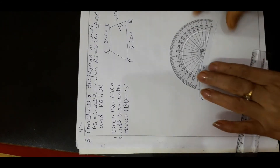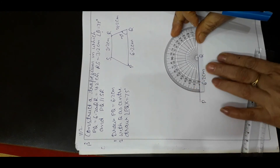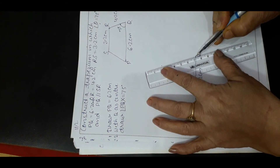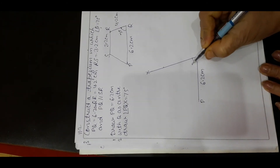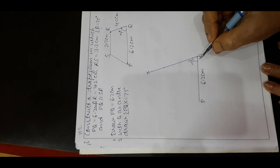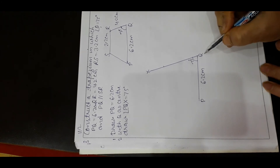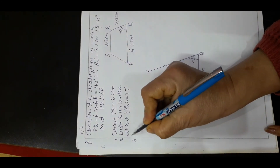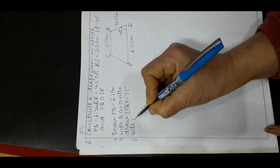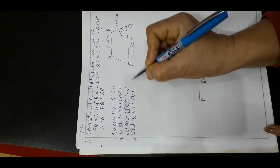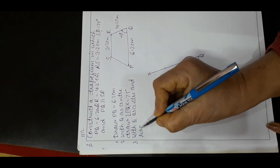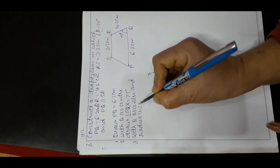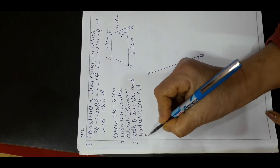Draw the 75 degree angle, making ray QX. With Q as center and radius 4.2 cm — since QR equals 4.2 — cut QX at R.